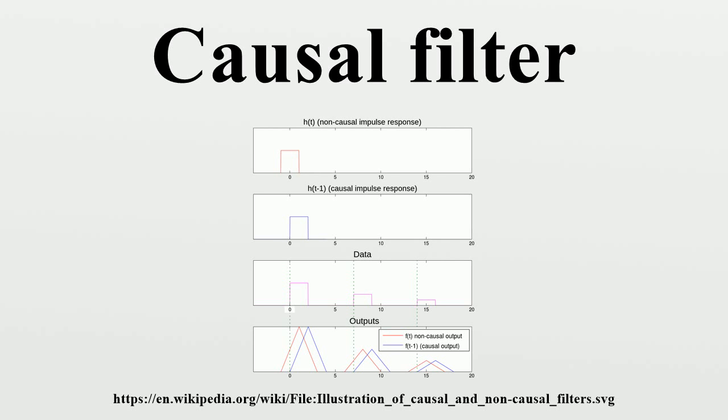An example of an anti-causal filter is a maximum phase filter, which can be defined as a stable, anti-causal filter whose inverse is also stable and anti-causal.